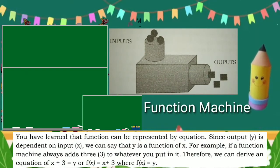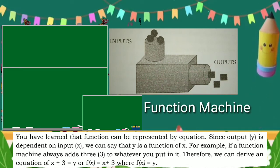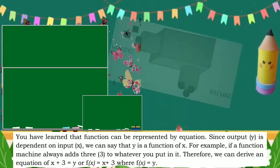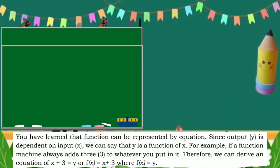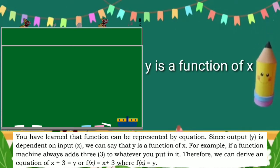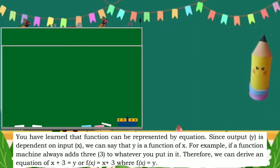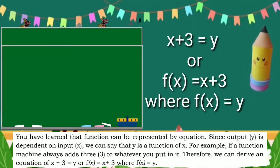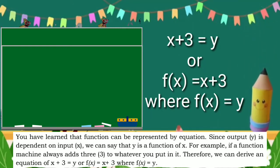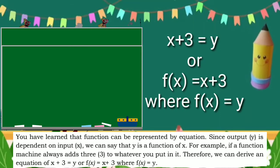You have learned that a function can be represented by an equation. Since output y is dependent on input x, we can say that y is a function of x. For example, if a function machine always adds 3 to whatever you put in, therefore we can derive an equation f of x is equal to x plus 3, where f of x is equal to y.